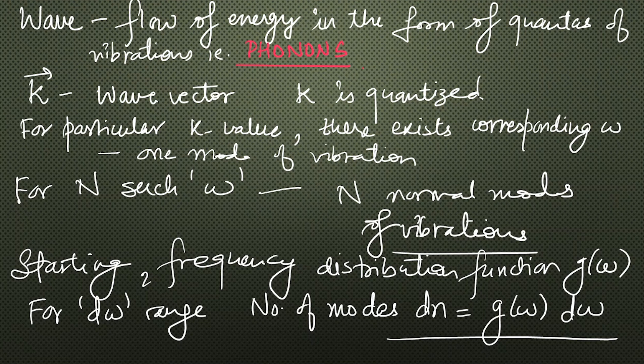The disturbances or vibrations are represented by waves. A wave is a flow of energy in the form of quanta of vibration, that is phonons. k is the wave vector. In our quantum system, k is quantized, taking certain discrete values. For a particular k value there exists a corresponding omega, meaning for one k there is one mode of vibration. So for N such omega values there are N normal modes of vibration. We start the derivation with the frequency distribution function g(ω): for a range dω, the number of modes dN equals g(ω)·dω.